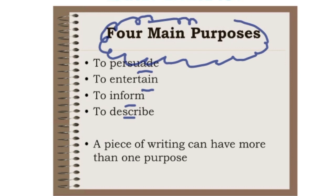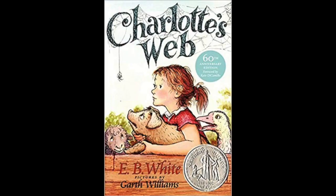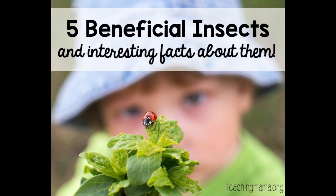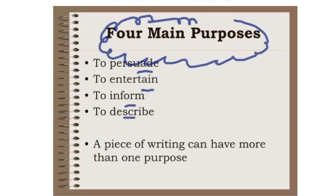So if I was reading Charlotte's Web, hopefully you'd say Charlotte's Web — E.B. White was trying to entertain, right? But if I was reading something on how spiders are good for the environment and how they're saving the world, well, maybe that would be more on persuade.